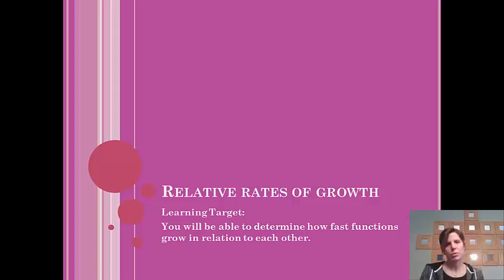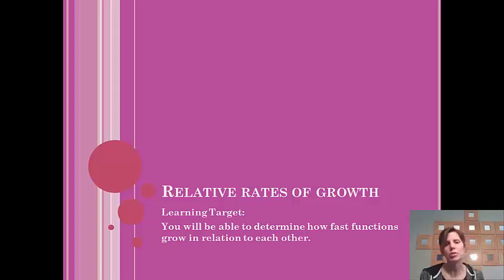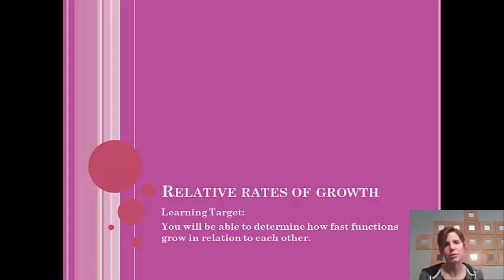In the study of L'Hôpital's Rule, we're able to discuss something called relative rates of growth. Basically, with this concept, what we're trying to do is figure out which function is growing faster. If I were a biologist with two different functions that were growing, I might need to figure out which one was growing faster. Or in economics, I might want to find out which function will grow faster. Sometimes it's obvious, but sometimes we can verify it using relative rates of growth. At the end of this lesson, you'll be able to determine how fast functions grow in relation to each other.